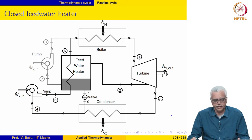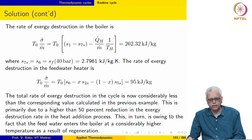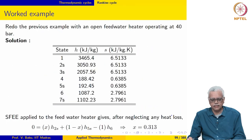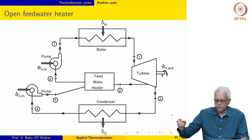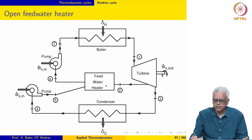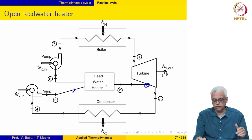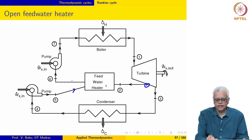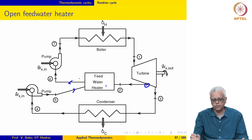We saw the open feed water heater and mentioned that the streams that come into the open feed water heater and the stream that exits are all at the same pressure. The feed water heater operates at the extraction pressure from the turbine. So the fluid that enters the heater and the extracted stream are at the same pressure, and the feed water that leaves the heater afterwards is also at the same pressure.